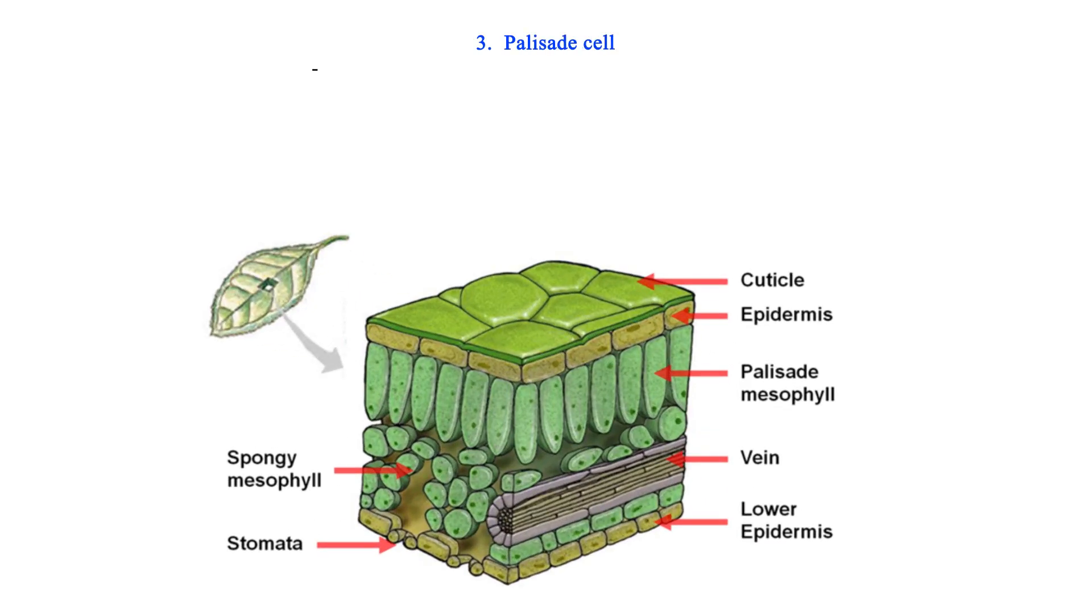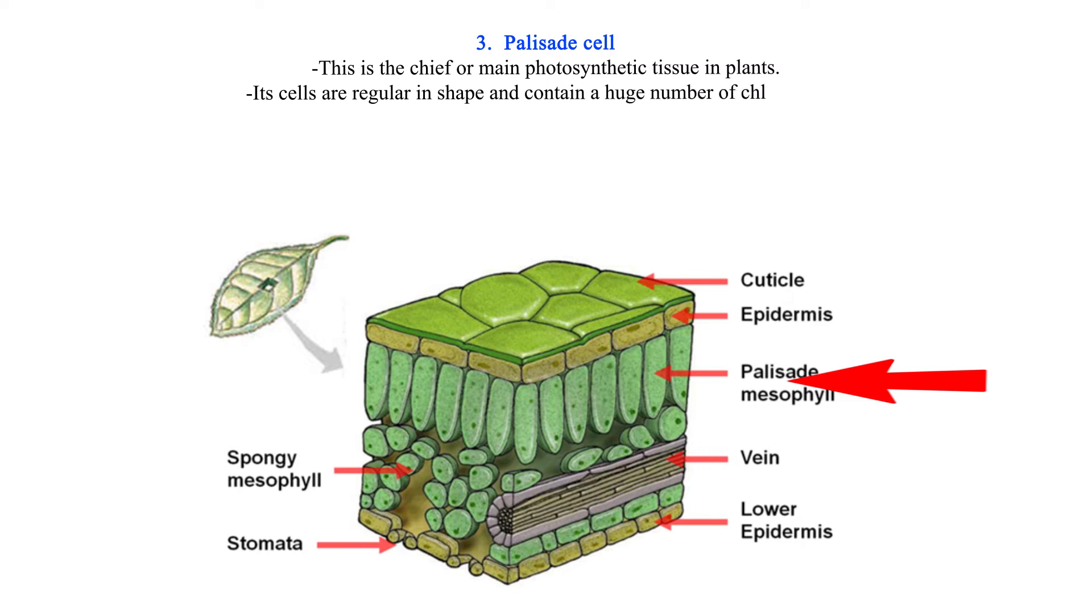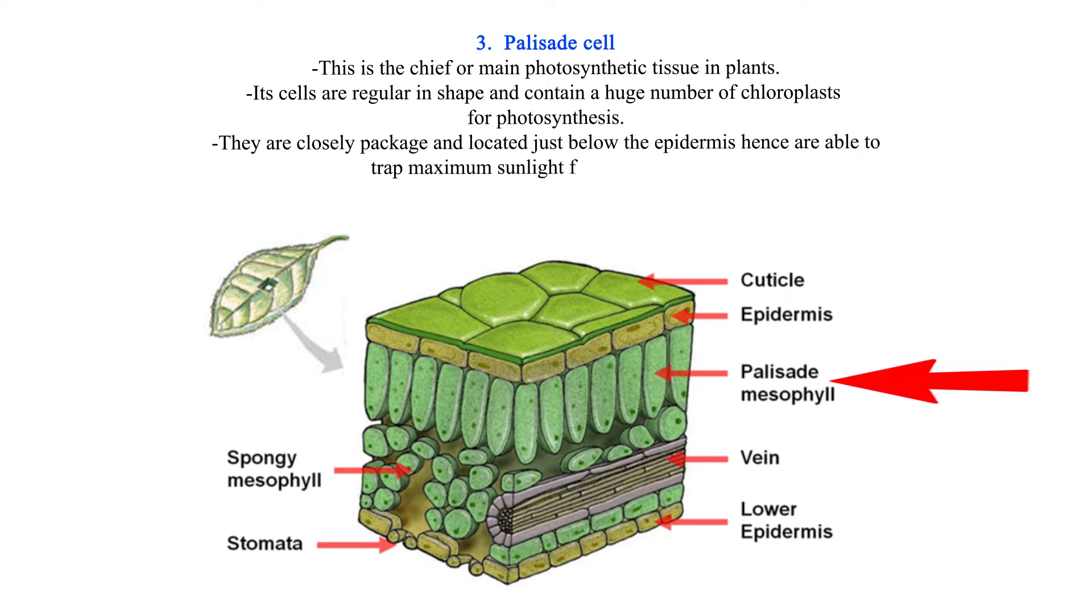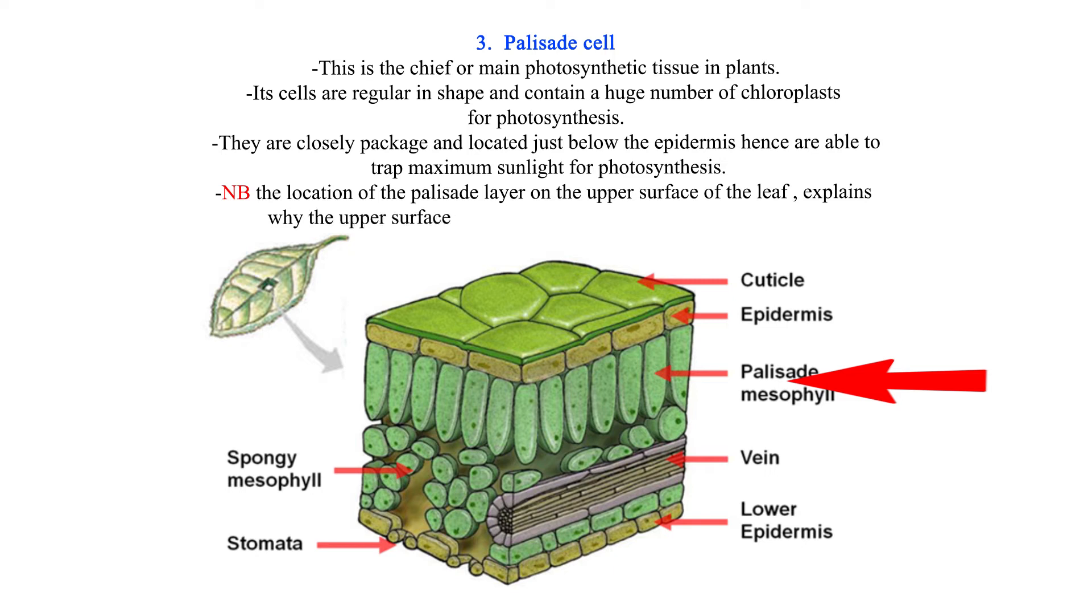3. Palisade Cell. This is the chief or main photosynthetic tissue in plants. Its cells are regular in shape and contain a huge number of chloroplasts for photosynthesis. They are closely packaged and located just below the epidermis, hence are able to trap maximum sunlight for photosynthesis. NB: The location of the palisade layer on the upper surface of the leaf explains why the upper surface of the leaf is greener than the lower surface.